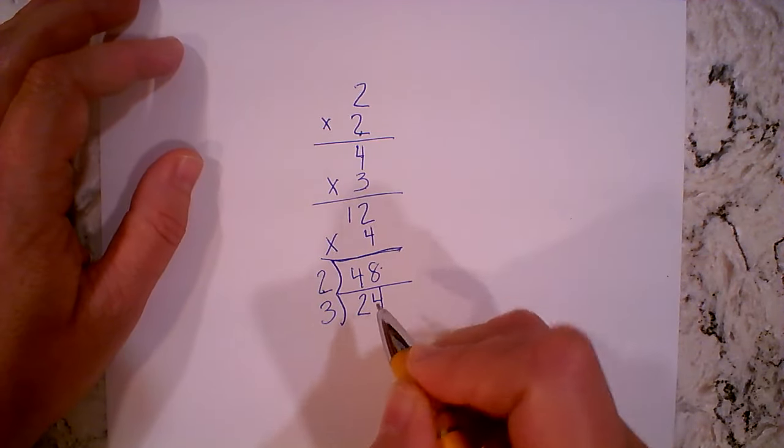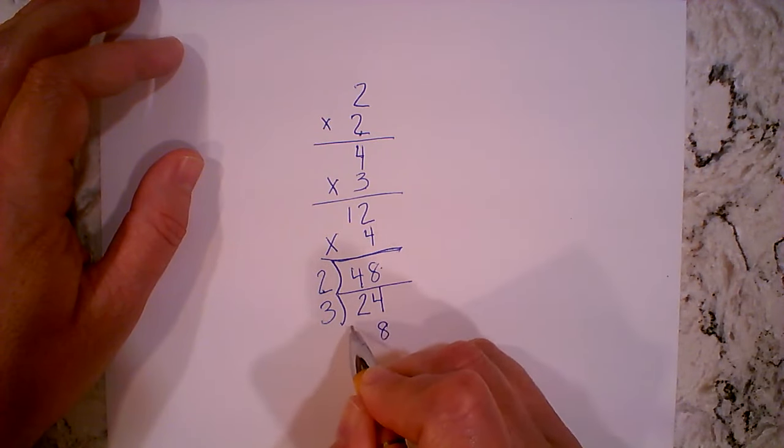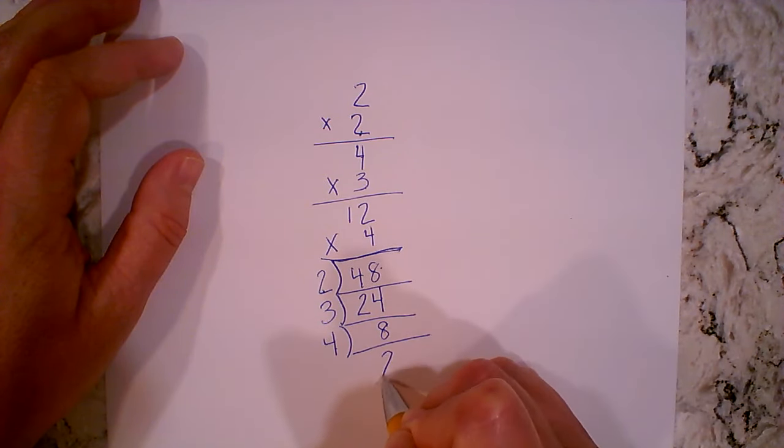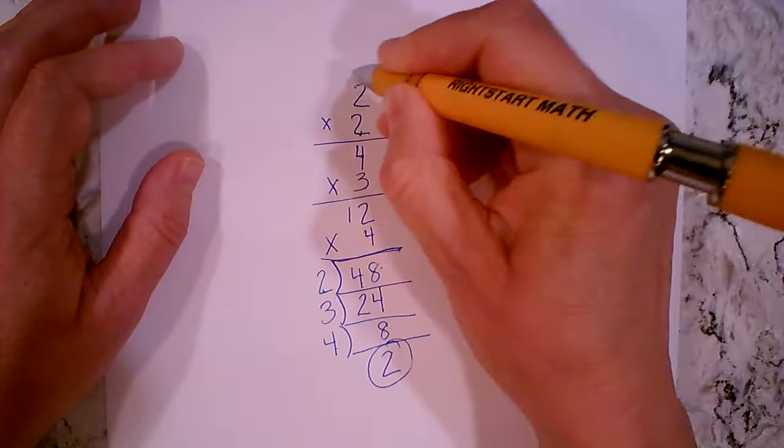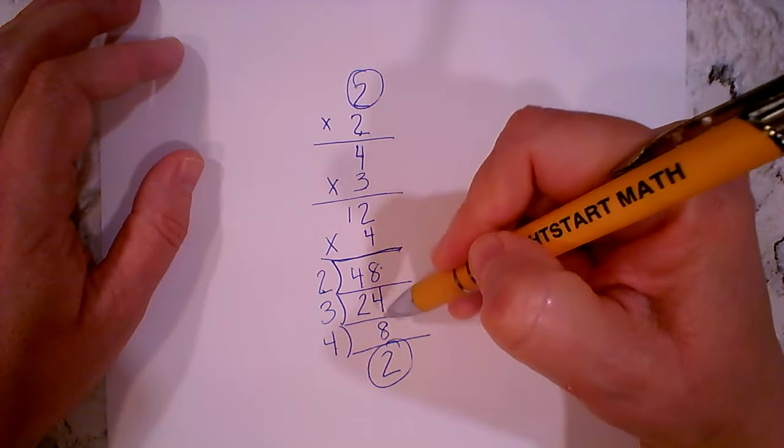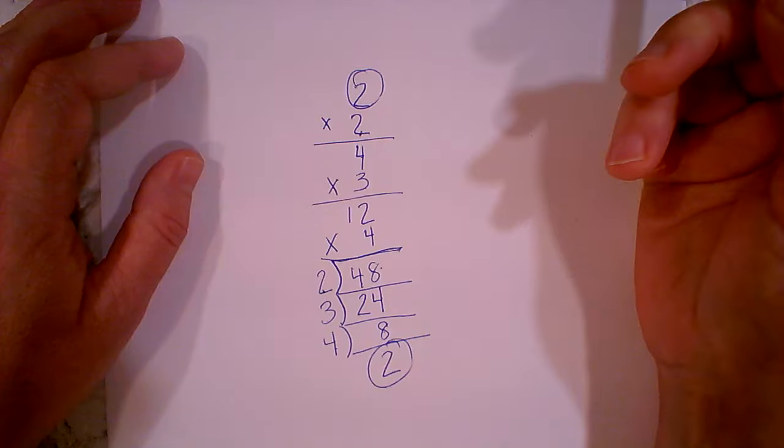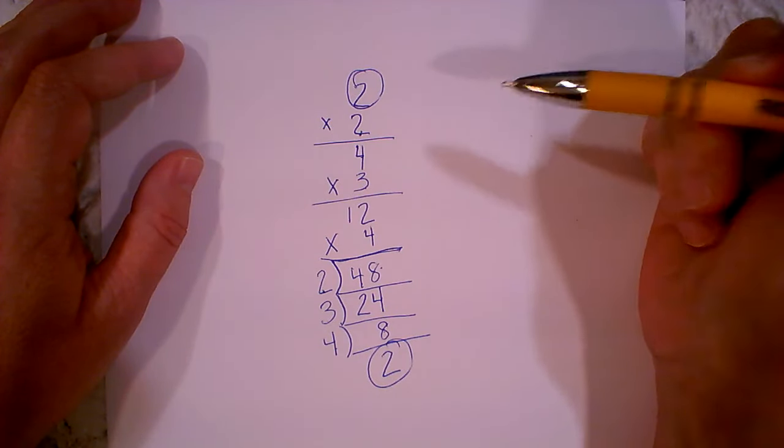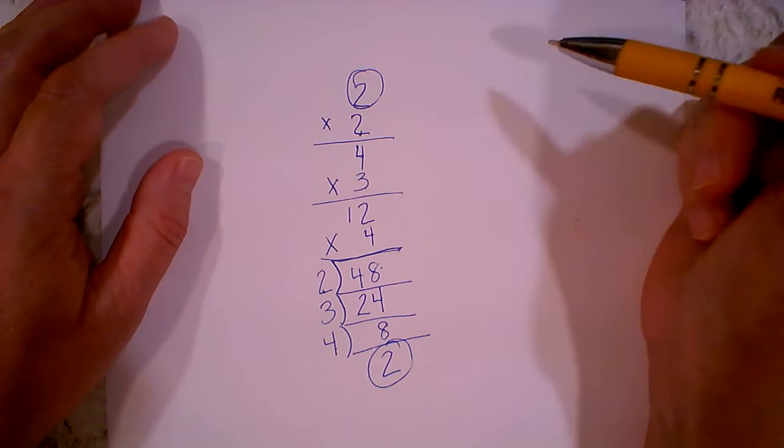We started with two, now we're going to do three. Three goes into 24 how many times? It goes eight times. Then we're going to divide by four. Four goes into eight how many times? That would be two, which should be our starting number. If at any point in the process we have a remainder, that means either a multiplication error has occurred or a division error has occurred.